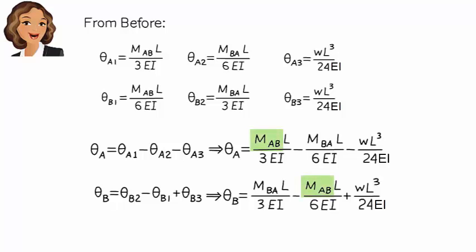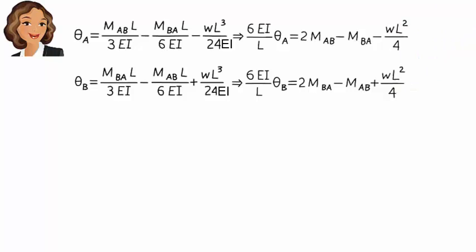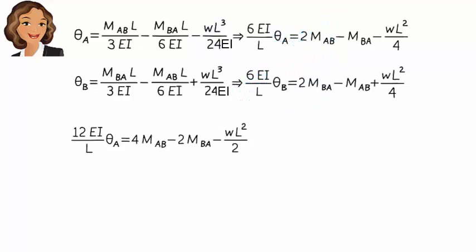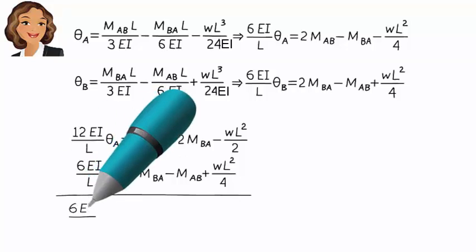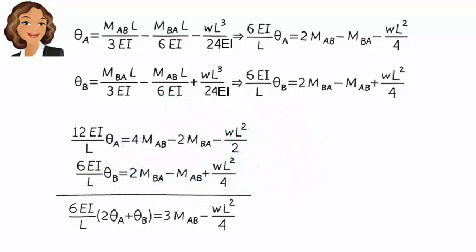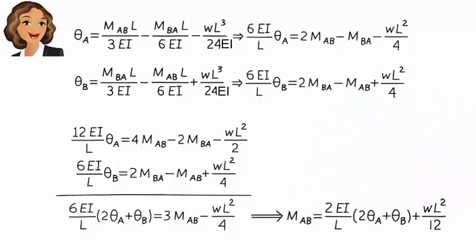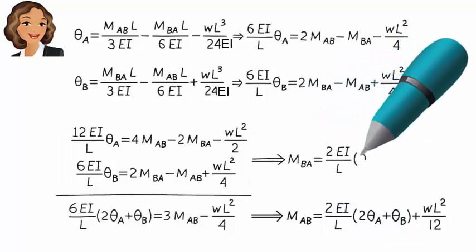Let's treat M-A-B and M-B-A as unknowns and solve for them. First, arrange the two equations, then multiply the first equation by 2 and add it to the second equation. This gives us an expression from which we solve for M-A-B. Substituting this expression for M-A-B back into one of the equations, we get M-B-A.